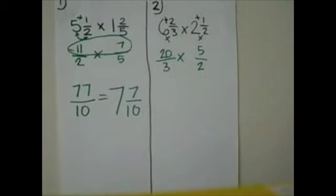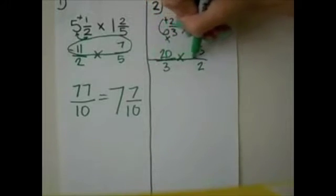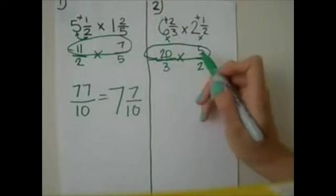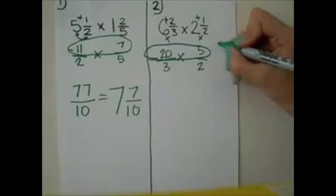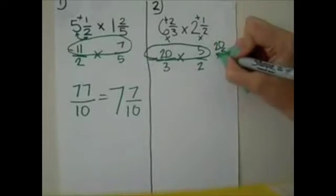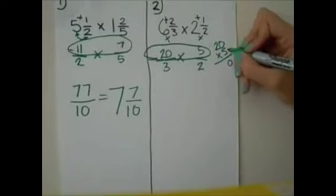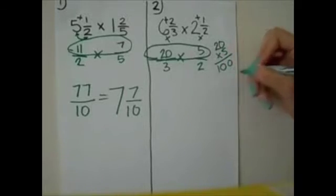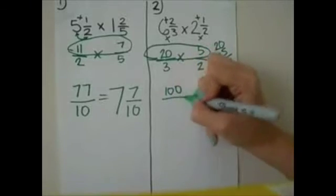And we want to multiply the top first, and that would be 20 times 5. You could write that down on paper, 20 times 5, 5 times 0 is 0, 5 times 2 is 10, so it would be 100, of course you could always do that mentally as well.